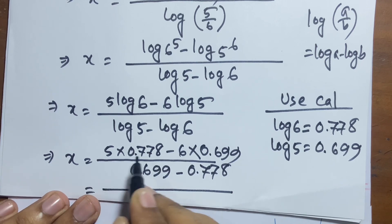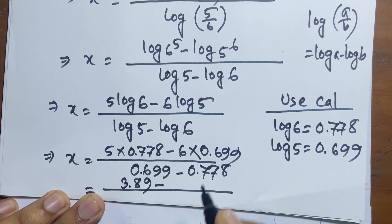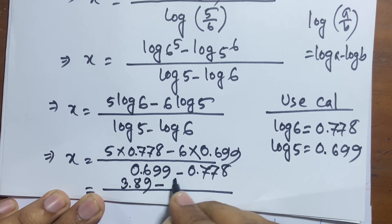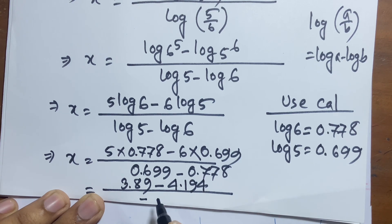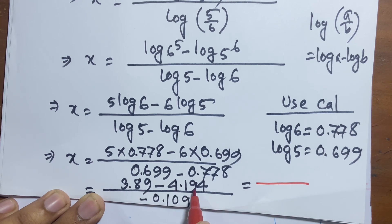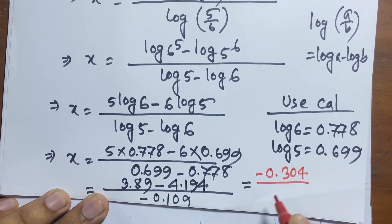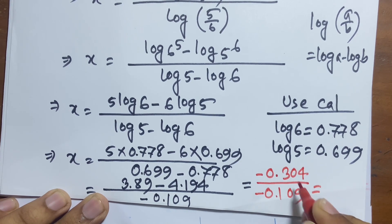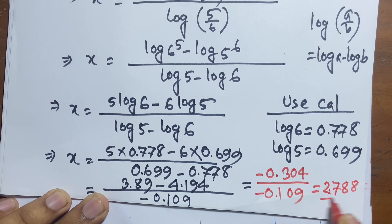Now: 5 × 0.778 = 3.89 and 6 × 0.699 = 4.194. So the numerator is 3.89 − 4.194 = −0.304, and the denominator is 0.699 − 0.778 = −0.079. Dividing gives x ≈ 2.788. So this is the value of x.